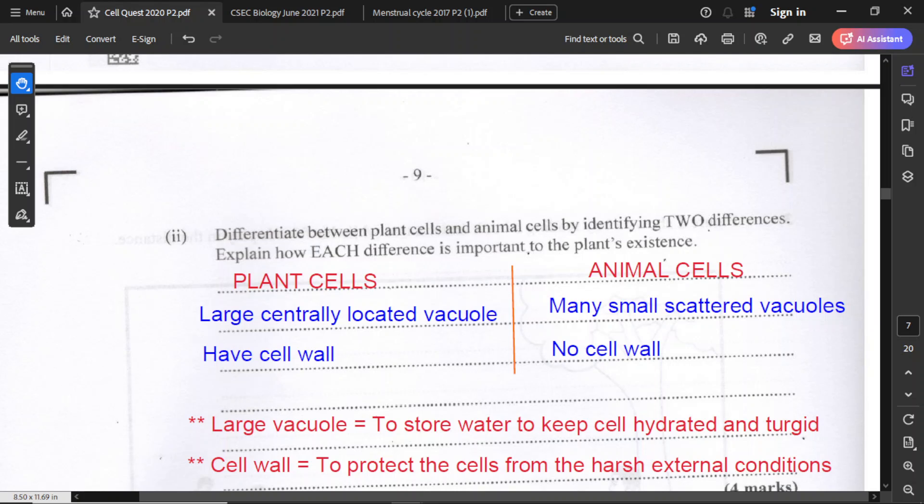For the plant cells, they have large centrally located vacuole, and for animal cells, there are many small scattered vacuoles. For plant cells, they have a cell wall, but there is no cell wall in the animal cells.